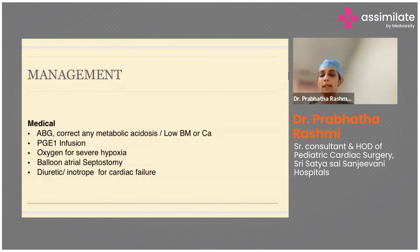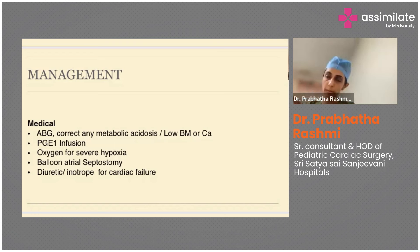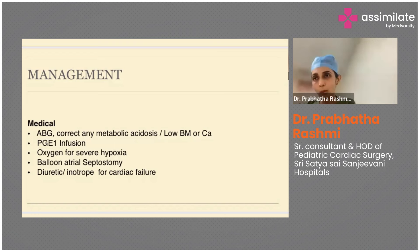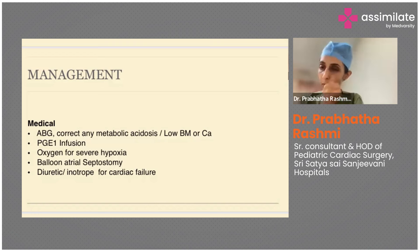Once a balloon atrial septostomy is done, the child looks good — but do not send the child home without operating. If you make a big ASD and tear the interatrial septum, blood coming into the left atrium has two choices: go into the left ventricle or into the right atrium. Since RA pressure is lower, blood preferentially goes there, removing volume load from the left ventricle. The LV, already pumping against a low-pressure pulmonary artery, will regress quickly — in as little as six to seven days. Treat balloon atrial septostomy only as a bridge to surgery.